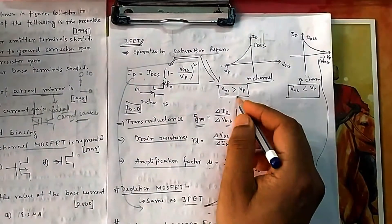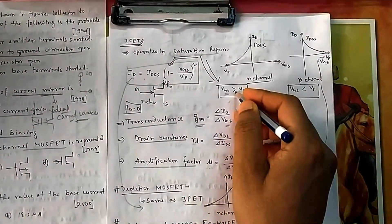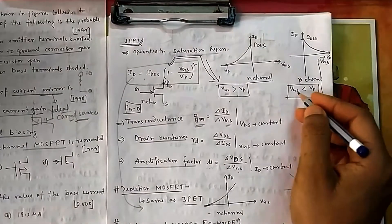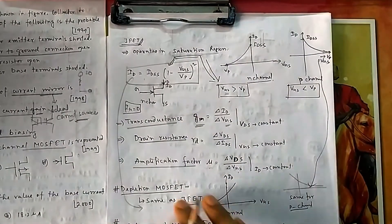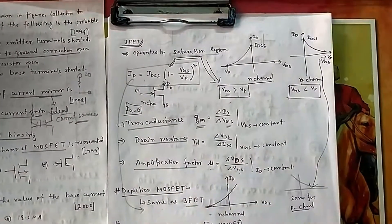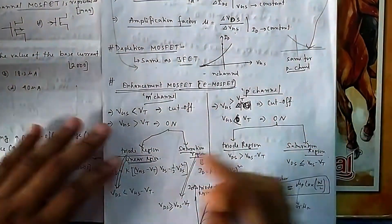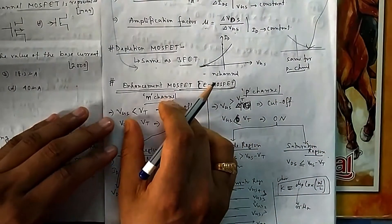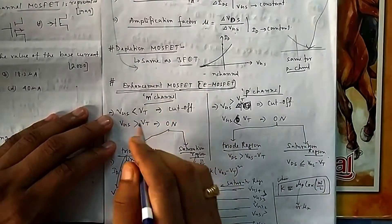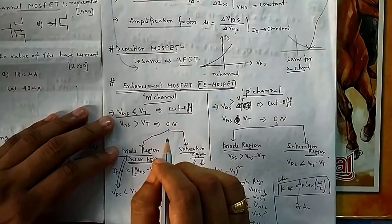For enhancement-type MOSFET, the device turns on when V_GS is greater than V_P for N-channel, or less than V_P for P-channel. For N-channel enhancement MOSFET, if V_GS is less than V_T (threshold voltage), it is in cutoff.